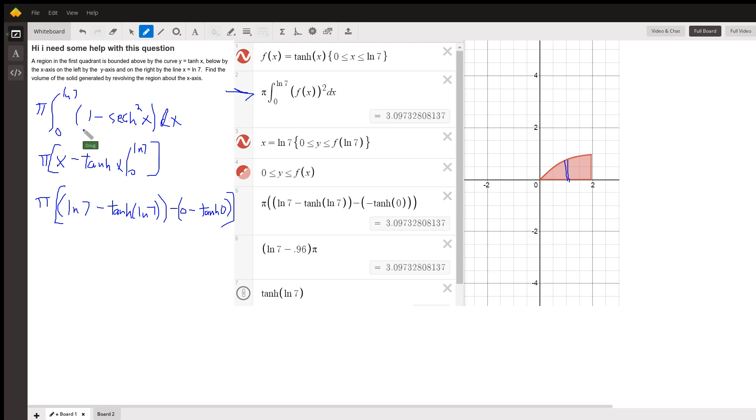The antiderivative of 1 is x. The antiderivative of hyperbolic secant squared is hyperbolic tangent.